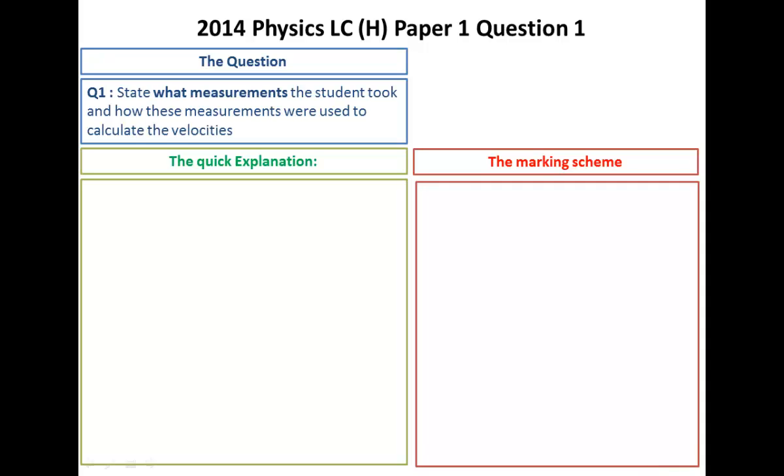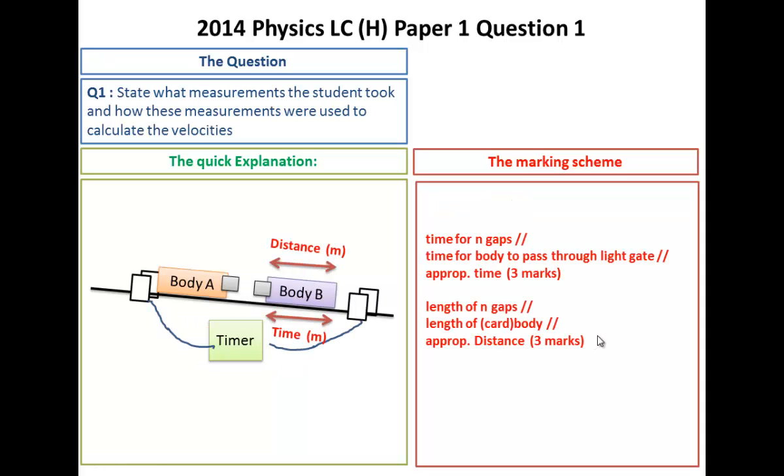State what measurements a student took and how these measurements were used to calculate the velocity. Yeah, measure the mass with a mass balance. You don't use a weighing scales. No, that will give you the weight in newtons. You're looking for kilograms here. You also need the time for the amount of gaps and the length for the amount of gaps because time and a distance will give you a velocity.